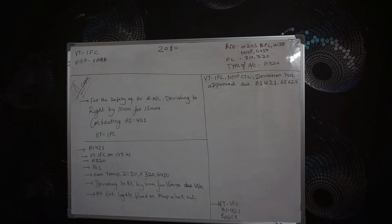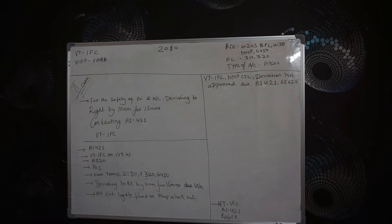The aircraft position was over TAMID, where we observed bad weather ahead extending towards the south. We were going from Delhi to Mumbai via Nagpur, had already crossed Nagpur, reached TAMID on a westerly heading, and were maintaining flight level 320. We observed bad weather and requested a right deviation of ten nautical miles for fifteen minutes.